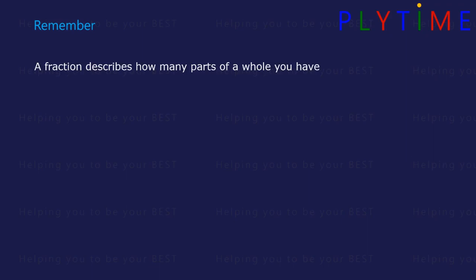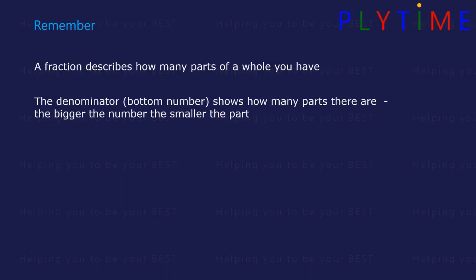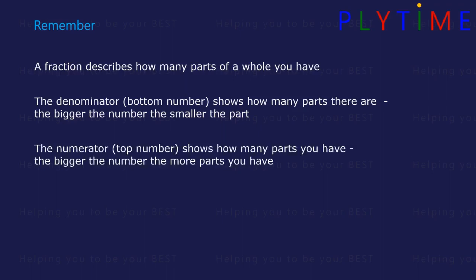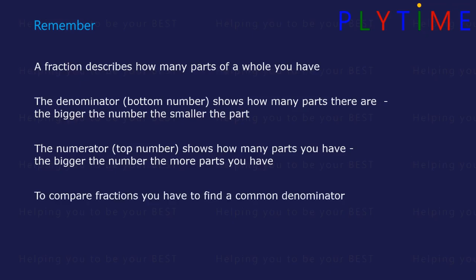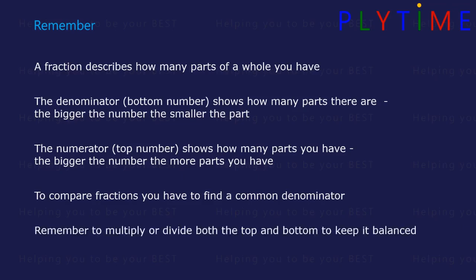Remember, a fraction describes how many parts of a whole you have. The denominator, or bottom number, shows how many parts there are — the bigger the number, the smaller the part. The numerator, or top number, shows how many parts you have, and the bigger the number, the more parts you have. To compare fractions, you have to find a common denominator. Remember to multiply or divide both the top and the bottom by the same number to keep it balanced.